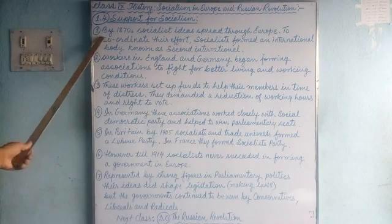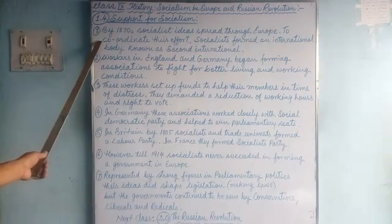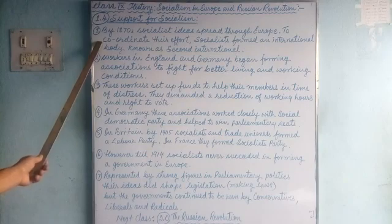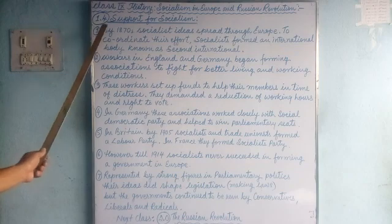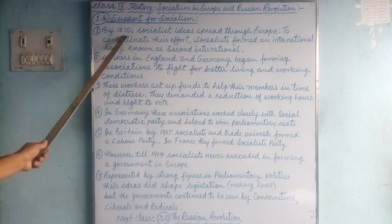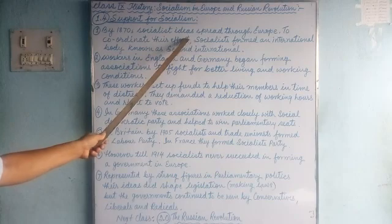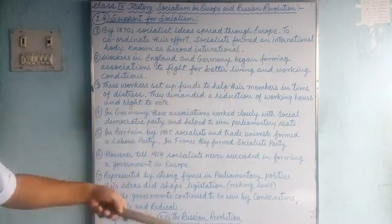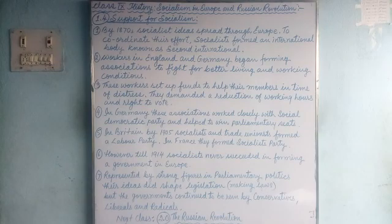There are altogether 7 points here. Listen carefully and we will go through them one by one. Point number 1: by 1870, socialist ideas spread through Europe — from one country to another, spreading all over Europe.